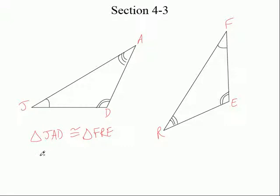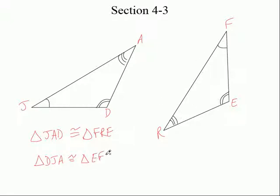I didn't have to call it JAD — I could have called it DJA. So if I go DJA, I'm going two to one to three. Come over here: what am I going to go? EFR. Two to one to three. Notice: J and F match up — they both have one arc. A and R match up — they both have three. D and E match up — they both have two. Make sense?